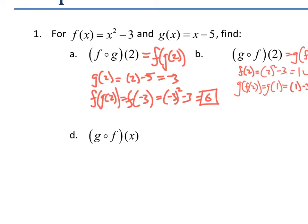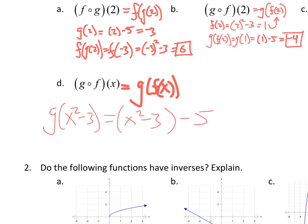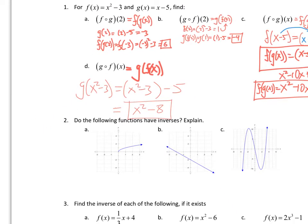Last one: g of f of x — g composed with f. Rewrite it as g of f of x and substitute. We put f inside of g, and f is x squared minus 3. The function g is x minus 5, which is blank minus 5. The blank is filled with x squared minus 3, so cleaning it up, we get x squared minus 3 minus 5, which is x squared minus 8.